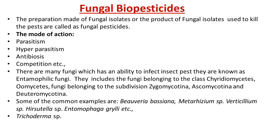Another important fungal biopesticide is Trichoderma species. This is a dominant group of fungi which has a broad spectrum of activity — an ability to kill various pathogens by mycoparasitism, by producing various antibiotics, by producing various toxin substances, enzymes, by creating oxidative stress, or by triggering the plant to produce pathogenesis-related proteins — PR proteins — so that the attack of the pathogen is controlled. In this lecture we will study each of these in detail, concentrating on Trichoderma species, which is in the syllabus.